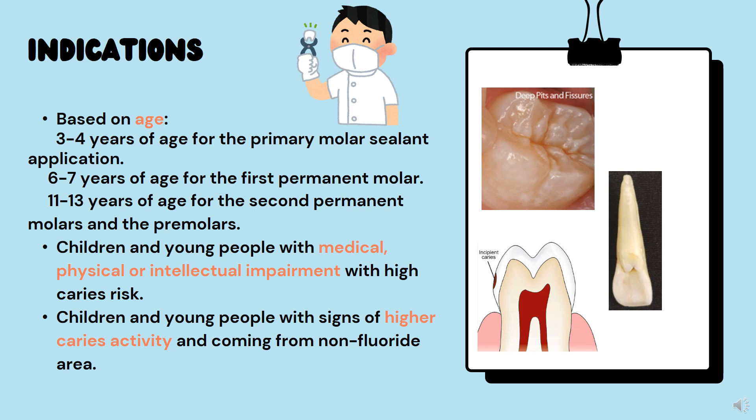What are the indications of pit and fissure sealant? Ages 3 to 4 years for primary molar sealant application; 6 to 7 years when the first permanent molar erupts; 11 to 13 years for the second permanent molar and premolar. Children and young people with medical, physical, and intellectual impairment with high caries risk, and those with signs of higher caries activity coming from non-fluoridated areas. Always remember: newly erupted teeth are a key indication.